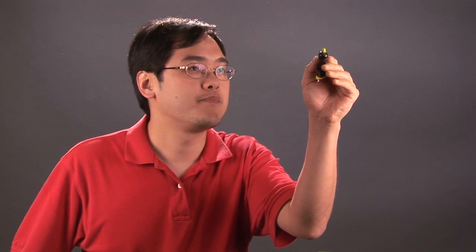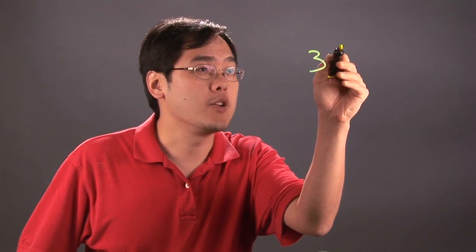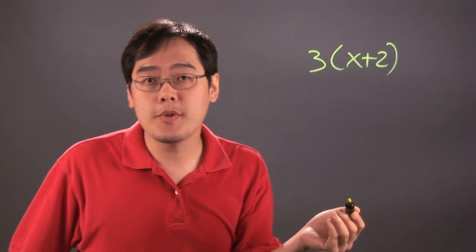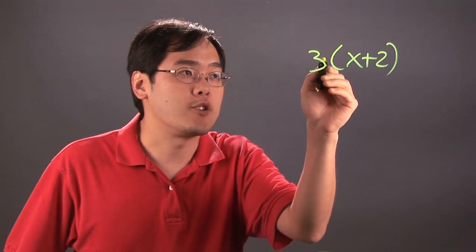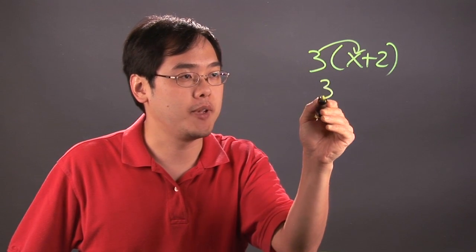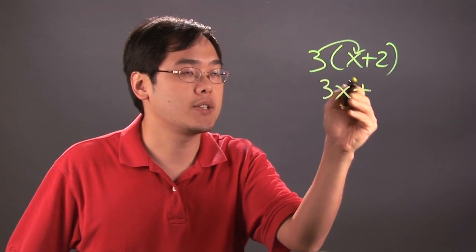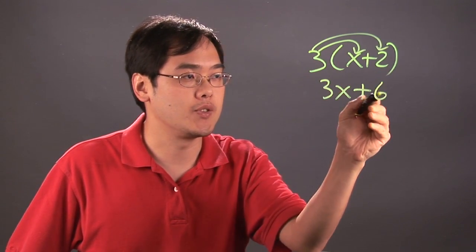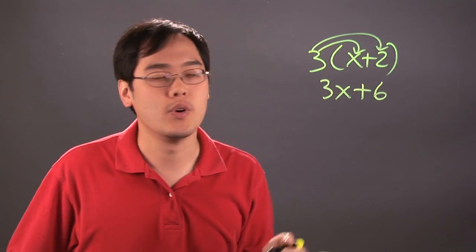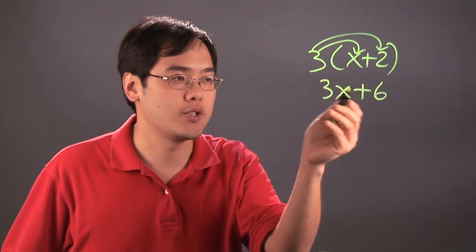For example, if you have a factor of 3 and you multiply it by x plus 2, when you use the distributive property you're just multiplying the factor by what's inside. So you have 3 times x, that would be 3x, you have a plus, and then 3 times 2, that's going to give you 6. So if you have a factor of 3 and you're distributing it to the other factor x plus 2, this is what you have.